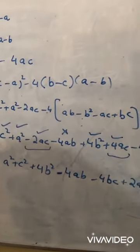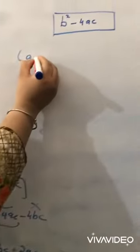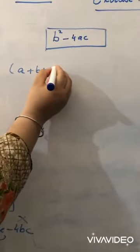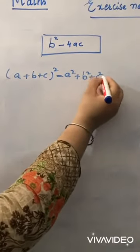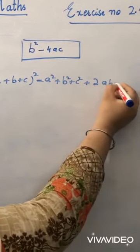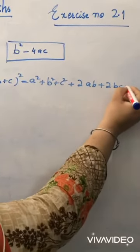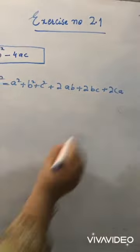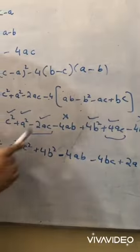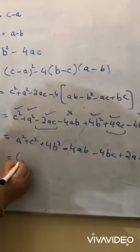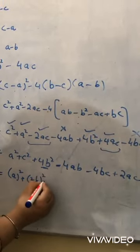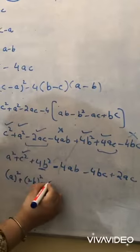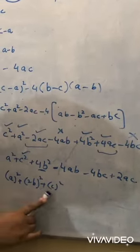We will apply the (a + b + c)² formula. The formula states: (a + b + c)² equals a² plus b² plus c² plus 2ab plus 2bc plus 2ca. We have to apply this formula and make this expression match the right-hand side. This is a², this is (2b)², and this is c².